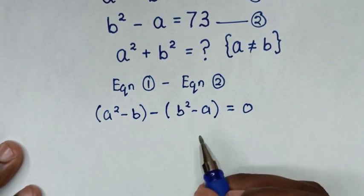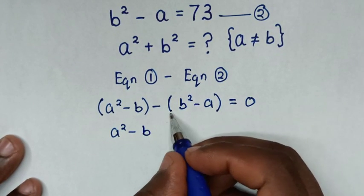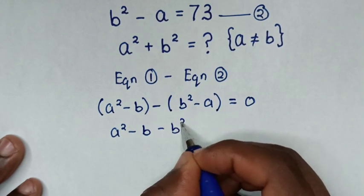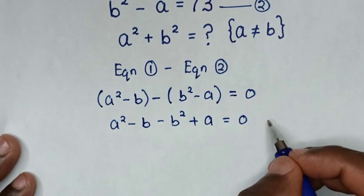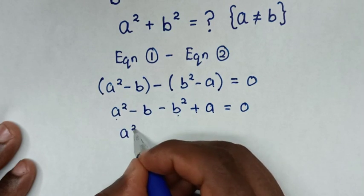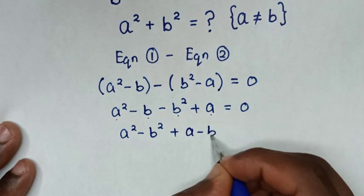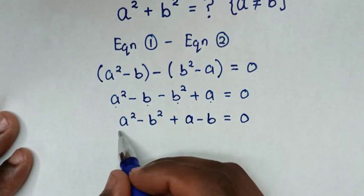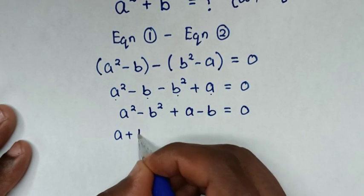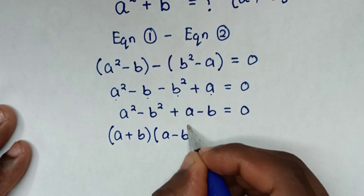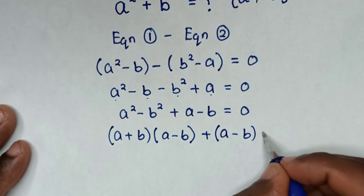In the next step, we will open these brackets. It will be A squared minus B, then opening the bracket gives negative B squared. And negative and negative A gives positive A, equal to 0. So it will be A squared minus B squared plus A minus B is equal to 0.